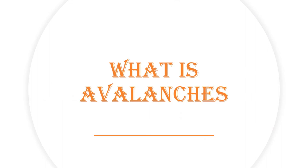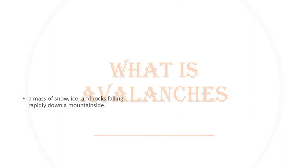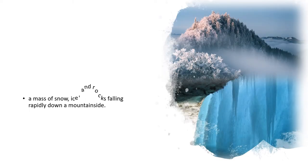What is an avalanche? An avalanche is a mass of snow, ice, and rocks falling rapidly down a mountainside. This is a picture of a mountain when it's very calm, and this is a picture of the downhill of a mountain after everything has happened.